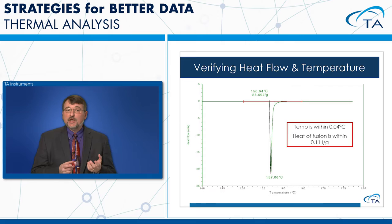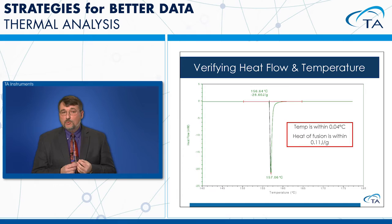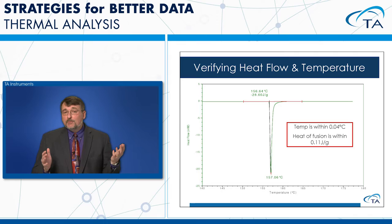This slide shows a verification of a DSC cell by running indium, plotting heat flow versus temperature and looking at the melt. The onset of that melt is 156.64 degrees — only 0.04°C away from the true melting point of indium. The heat of fusion is only 0.11 J/g away from the true value. That's excellent performance; I'm ready to run samples without recalibrating.